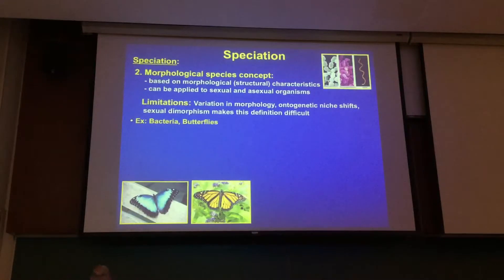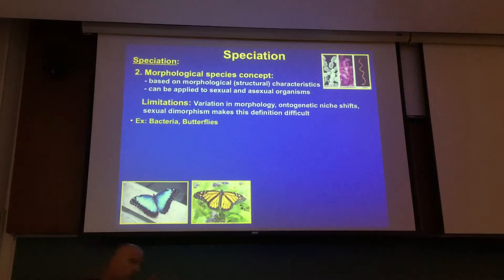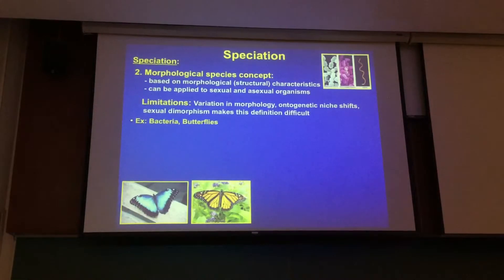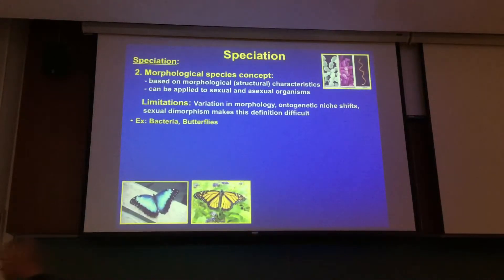Ontogenetic niche shift — do you look exactly the same as the day you were born? Completely different. In ontogenetic niche shifts, you look different as you develop from being a juvenile to an adult. Your morphology is completely different. Not only that, but you act in different ways, occupy different places, and eat different kinds of food. So characteristics are quite different from old to very young — that's a problem.